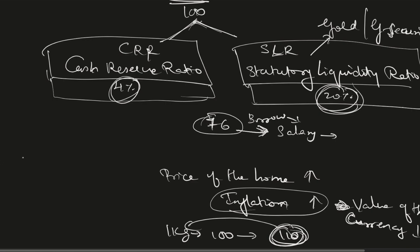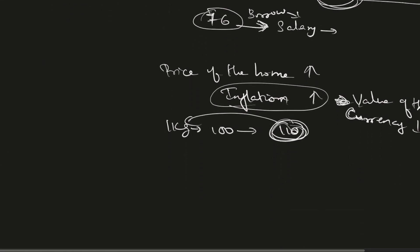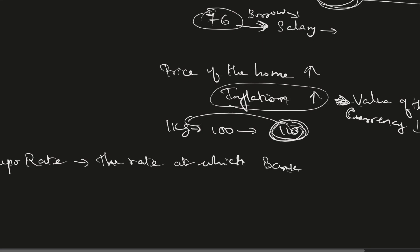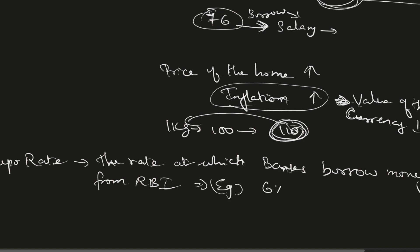The first and most highly used tool is the repo rate. Repo rate is the rate at which banks borrow money from RBI. RBI will increase this rate — say from 6% to 6.5%. When the repo rate goes up, banks are borrowing at a higher rate, so they will also lend money at a higher rate. This causes interest rates in the market to go up.